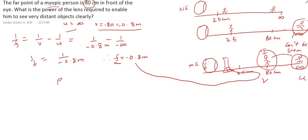Next, we find the power. Power is found by 1/f, which is 1/(−0.8) meters, equal to minus 1.25 diopters. So the power is minus 1.25 diopters. This is the power of the lens that should be used by the myopic person so that he can see objects clearly even if they are at infinity. Thank you.